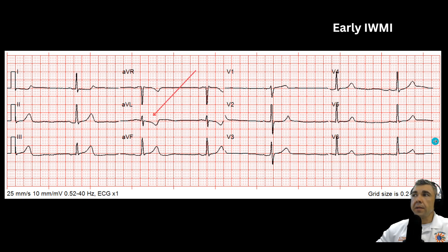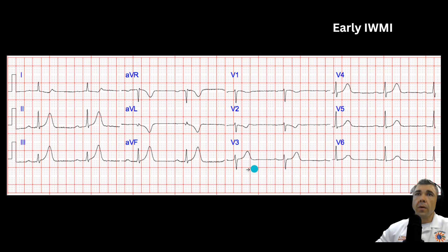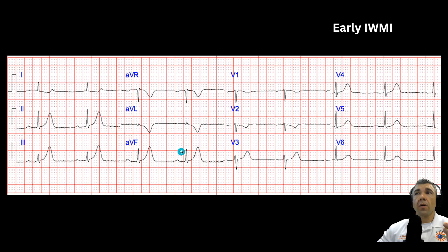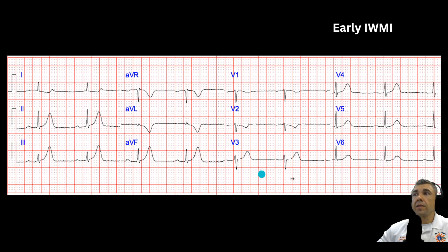Here's another one. You have the hyperacute T-waves we talked about, now in the inferior leads — big, tall, symmetrical, broad-based T-waves. Look at AVL — this is an early inferior wall MI. Look at V2 — you have a little bit of T-wave inversion starting, and that J-point is going to start to depress, so you'll have posterior wall changes as well. This is an early inferior wall MI, which is an RCA occlusion.